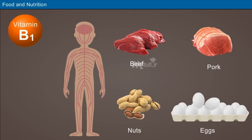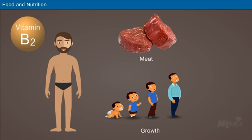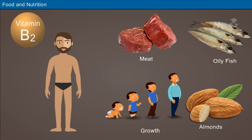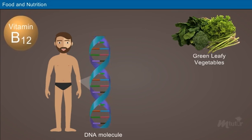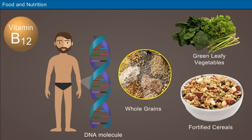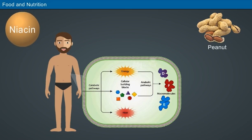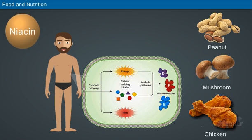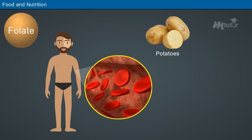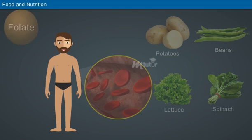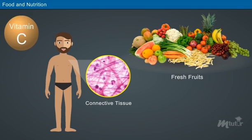Vitamin B1: it is required for proper functioning of the nerves, and is present in beef, pork, nuts, eggs, etc. Vitamin B2: it is essential for normal growth and development, and is present in meat, oily fish, and almonds. Vitamin B12: it is required for the synthesis of DNA, and is present in green leafy vegetables, fortified cereals, and whole grains. Niacin: it is required for the metabolism of carbohydrates, and is present in peanut, mushroom, and chicken, etc.